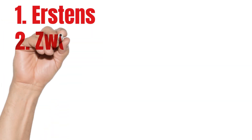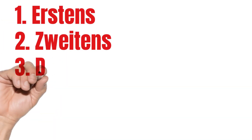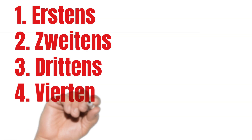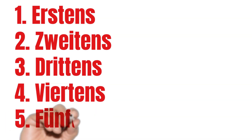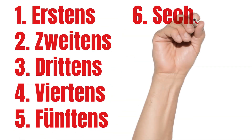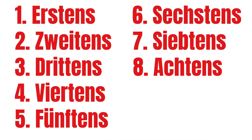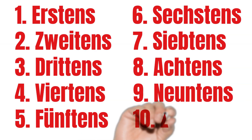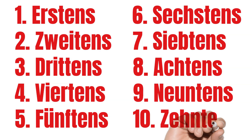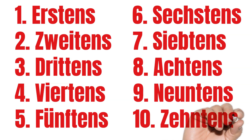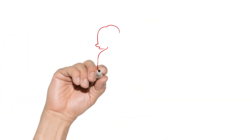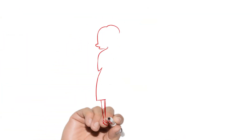Let's repeat the ordinal numbers for numbered lists once more: Erstens, Zweitens, Drittens, Viertens, Fünftens, Sechstens, Siebtens, Achtens, Neuntens, Zehntens. I hope I could show you some important ordinal numbers in Austrian German and in Standard German.